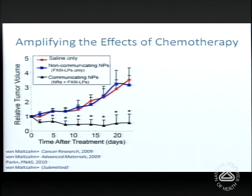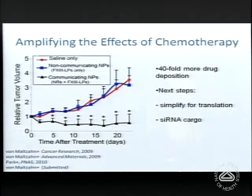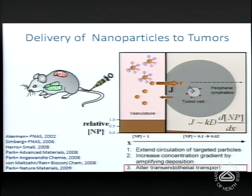The net result in a xenograft model of breast cancer shows that if the two nanoparticles cannot communicate — one coated with a control non-targeted peptide — tumors continue to grow. With the communicating system, tumor growth is suppressed. We see 40-fold more drug deposition using this strategy, and we have ideas for further simplification toward translation — ideally making these cascades autonomous or self-homing without requiring external light.